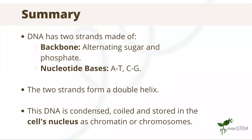In summary, today we learnt that DNA has two strands that are made of a backbone, which consists of alternating sugar and phosphate molecules, and nucleotide bases which undergo complementary bonding — remember that this occurs between adenine and thymine, or cytosine and guanine. We also learnt that the two strands form a double helix. Lastly, in eukaryotes, DNA is condensed, coiled, and stored in the cell's nucleus as chromatin or chromosomes.